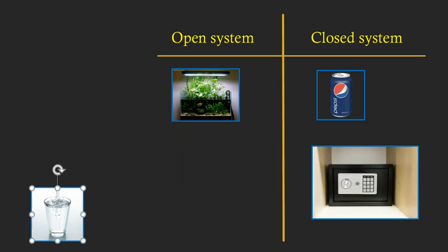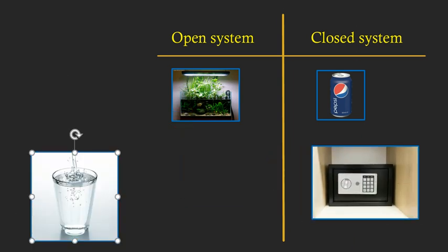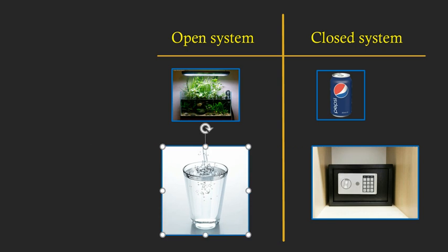And then finally, this glass of water. And you can see the water pouring into the glass. So obviously that's an open system. But even if nothing was pouring into the glass and it was just a glass of water, water could easily evaporate out of the glass. So those water molecules would be leaving the system, and so that would also be an example or a demonstration of an open system.